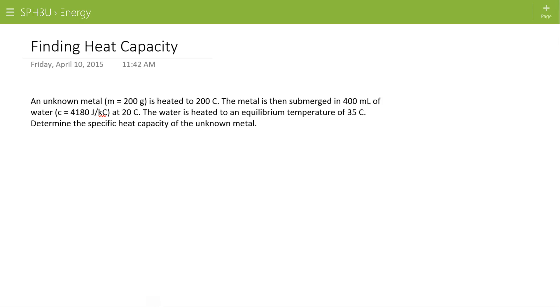Okay, finding the specific heat capacity. An unknown metal is heated to 200 degrees Celsius. The metal is then submerged in 400 milliliters of water at 20 degrees Celsius. The water is heated to an equilibrium temperature of 35 degrees Celsius.